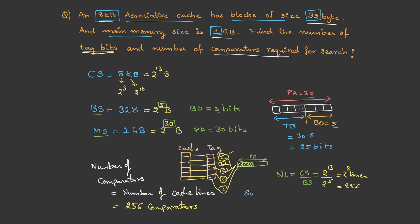Now, what about the size of each comparator? Each comparator must be capable of comparing the tag bits, which are 25 bits. Therefore the size of each comparator is a 25-bit comparator.